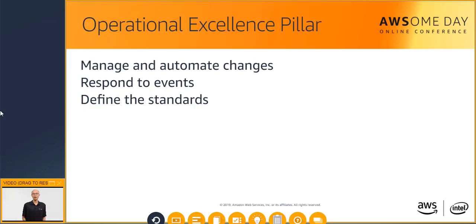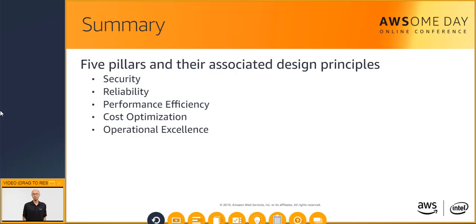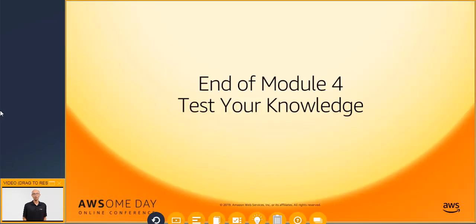The operational excellence pillar focuses on running and monitoring systems to deliver business value and continually improving processes and procedures. Key topics include managing and automating changes, responding to events, and defining standards to successfully manage daily operations. In summary, these are the five pillars that make up the AWS Well-Architected Framework.